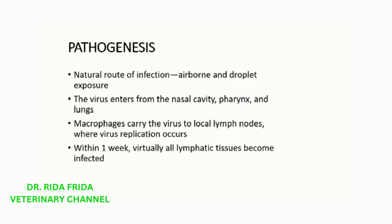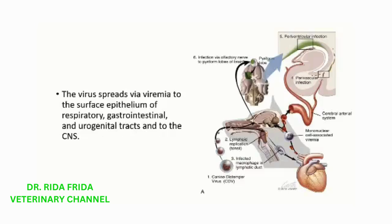Within one week of the infection, viral shedding occurs and virtually all the lymphatic tissues become infected. The virus then spreads via viremia to the surface epithelium of the respiratory, gastrointestinal, and urogenital systems, and lastly to the central nervous system.